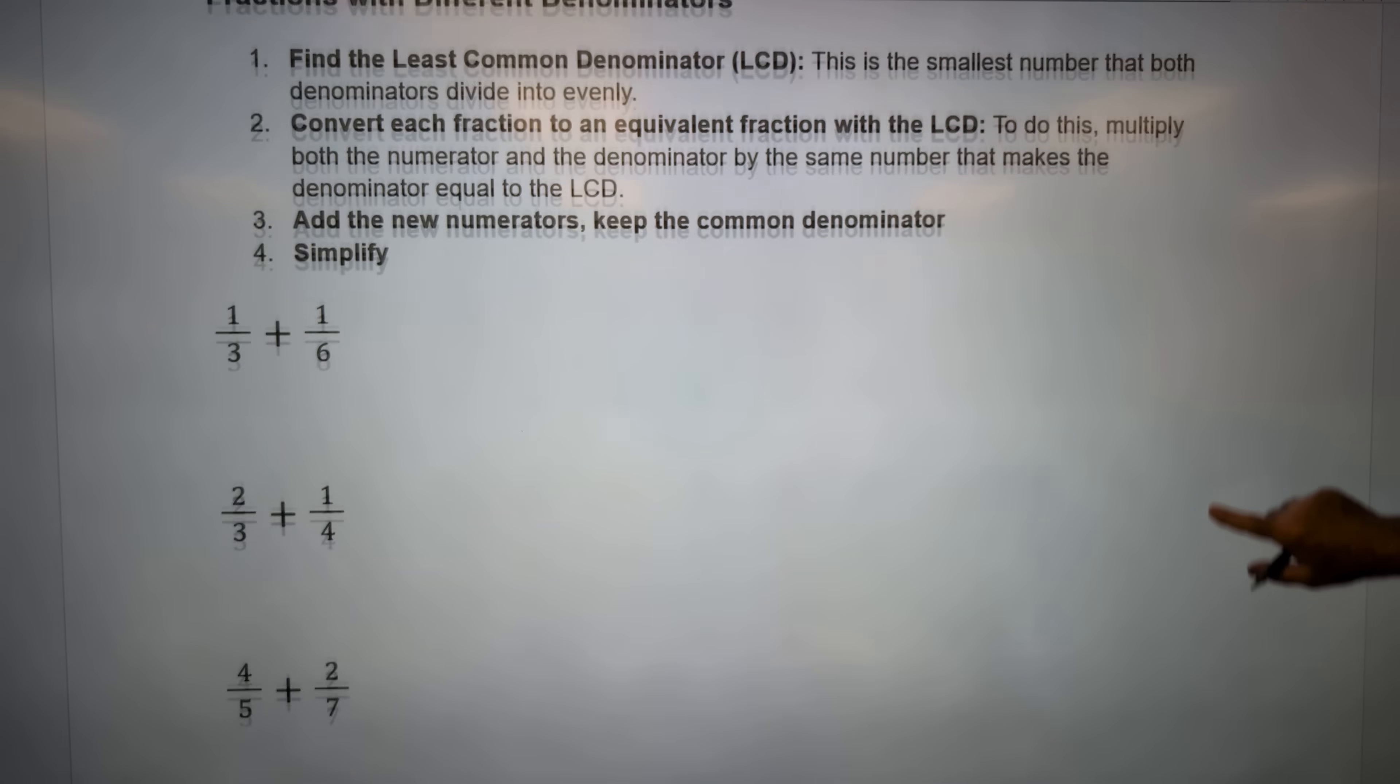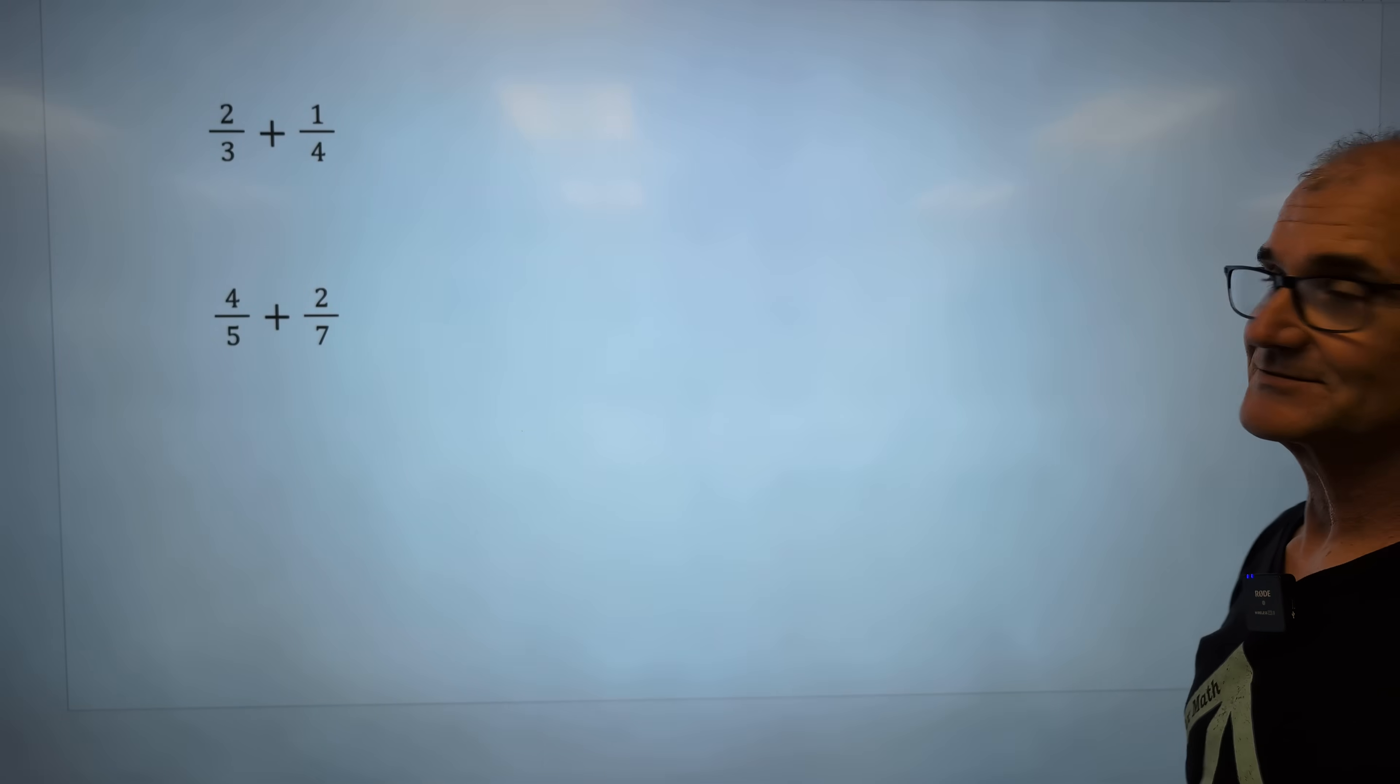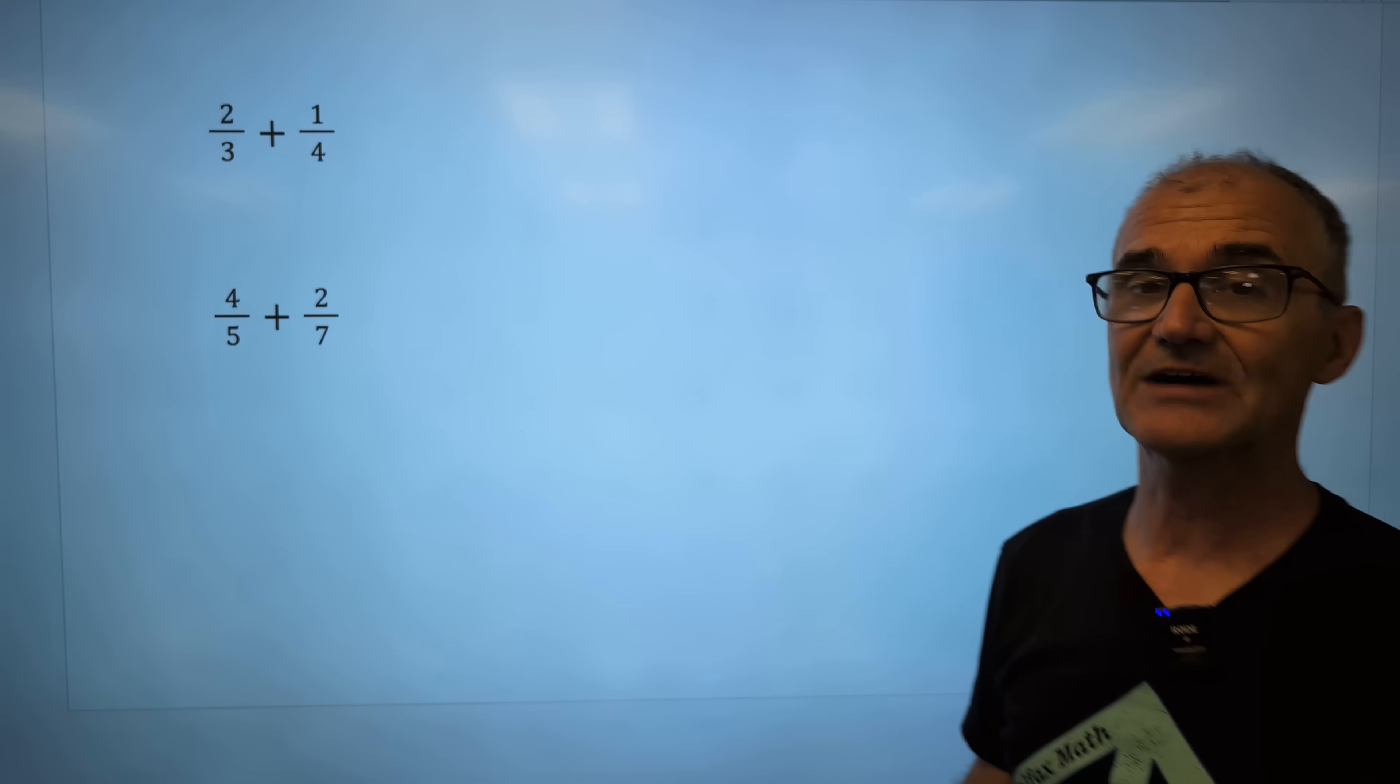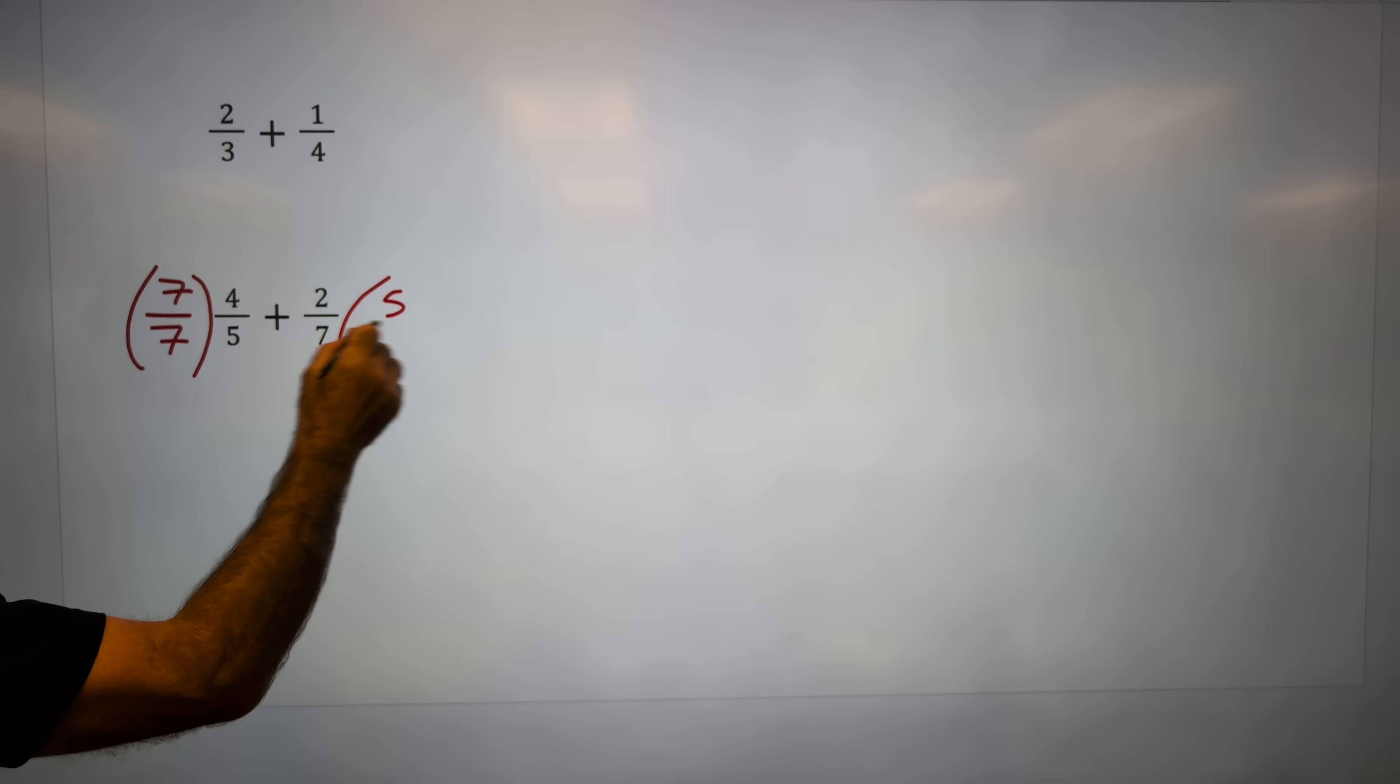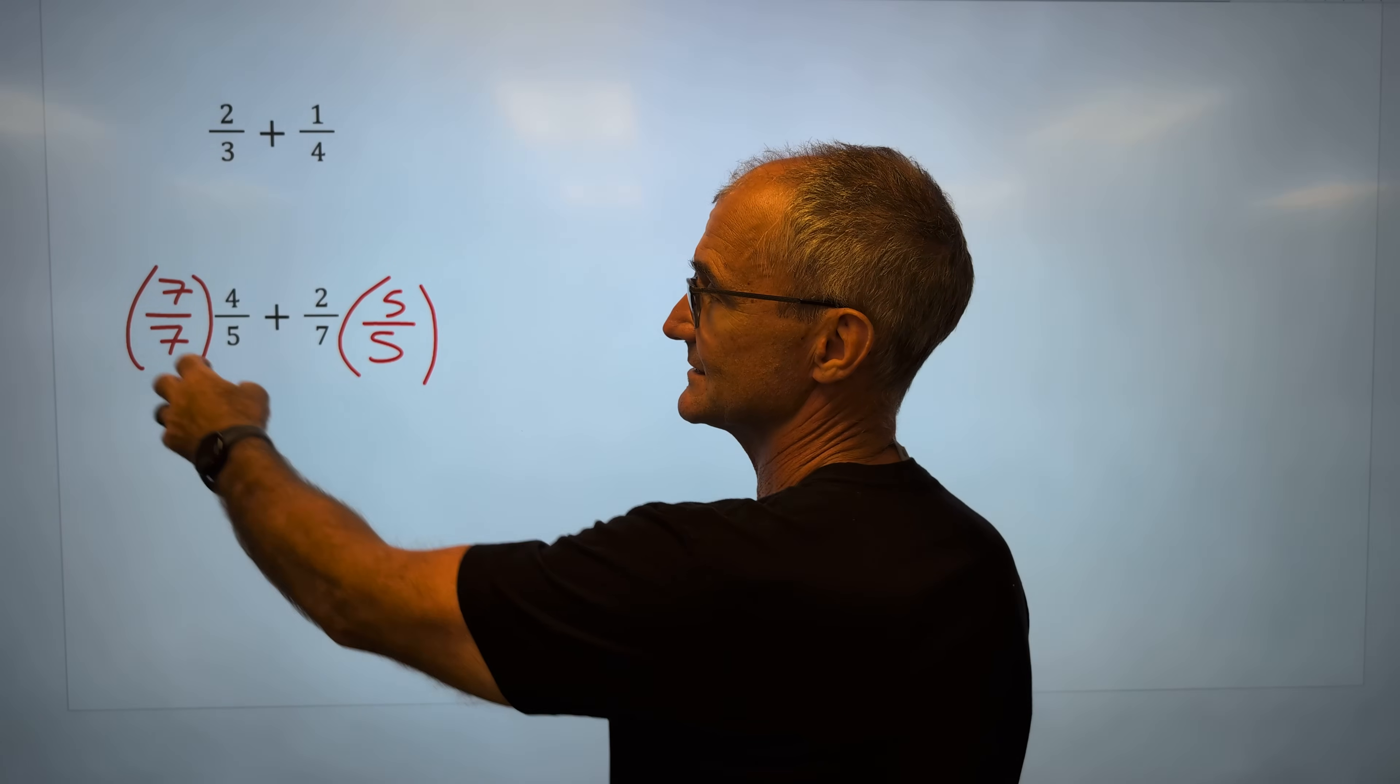Let's do this last one, four-fifths plus two-sevenths. What I'd highly recommend you do is pause the video, try the problem. The least common denominator, five, ten, fifteen, twenty, twenty-five. The only thing that this and seven will go into is thirty-five. So I have to multiply this by seven over seven and this by five over five.